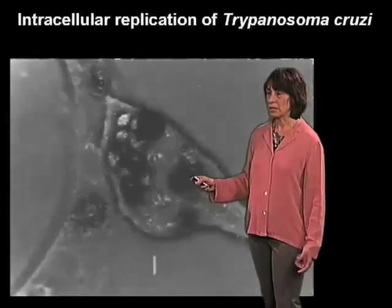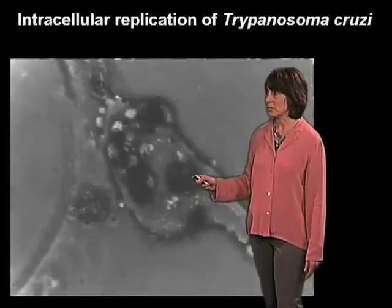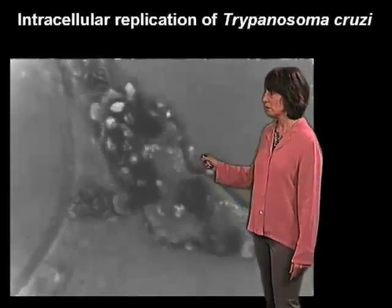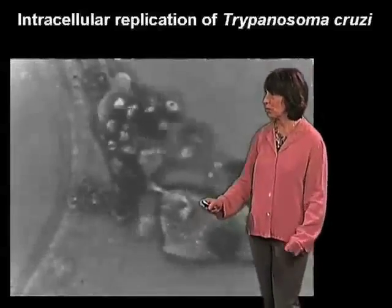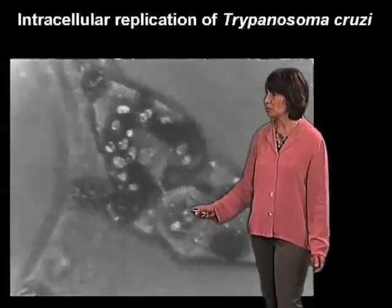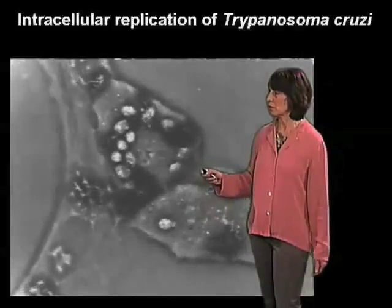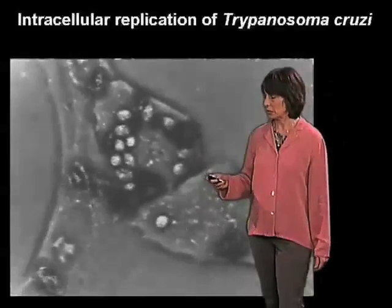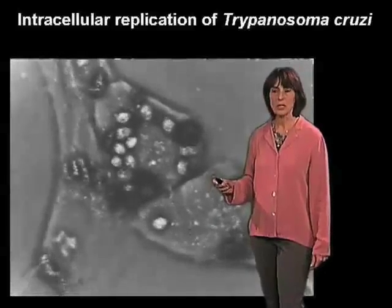Then the cell rapidly enters cytokinesis. If we focus on these cytoplasmic parasites, it's possible to see that one of them was actually delivered to one of the daughter cells while the majority remained in the other cell. So this cycle continues.